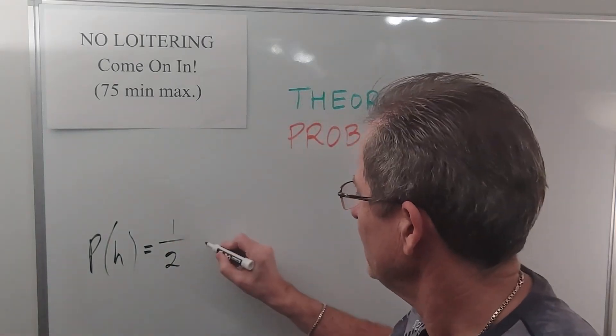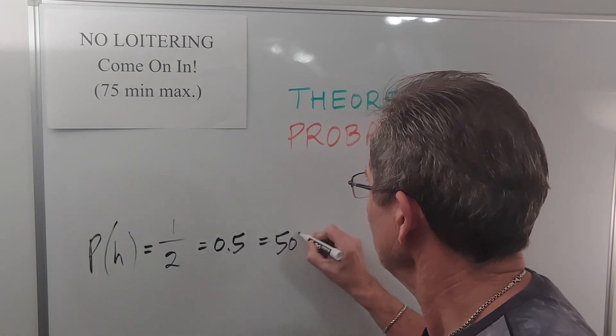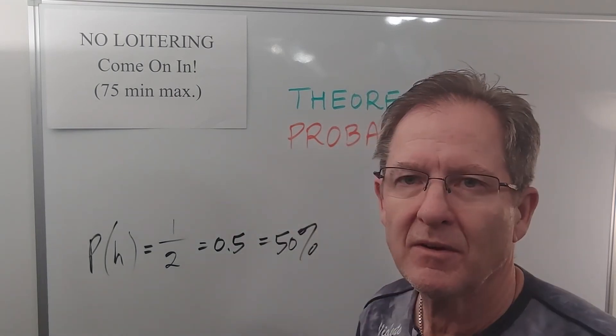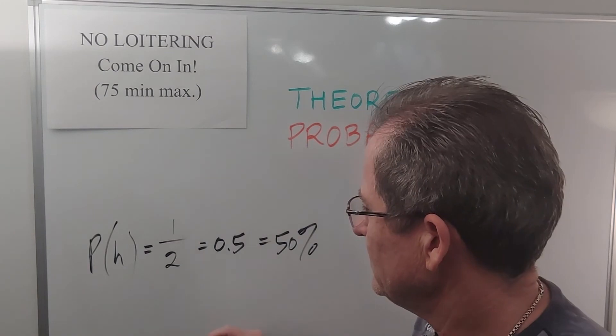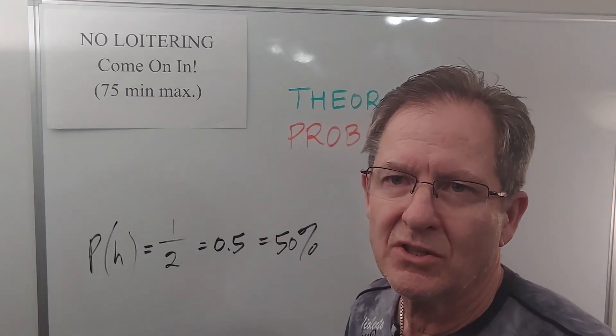Same with tails: 1/2, or 0.5, or 50%. Very basic. What about rolling a die?